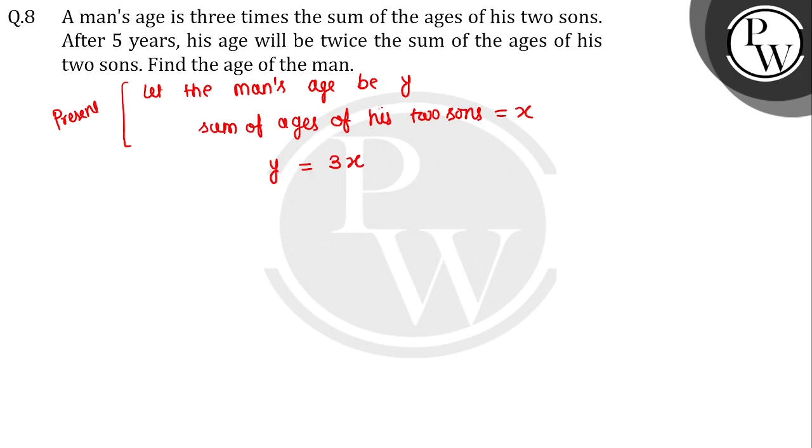After five years, what will happen? Man's age will be twice—twice means double—the sum of the ages of his two sons. So both sons' ages increase by five, five.